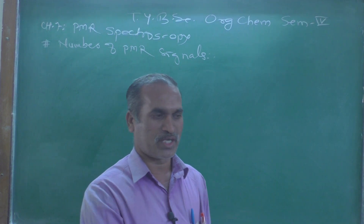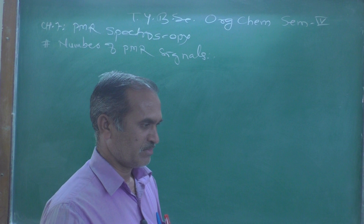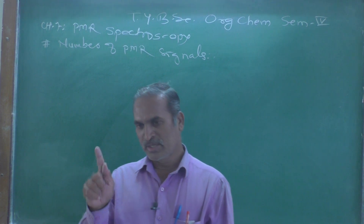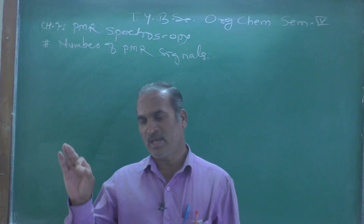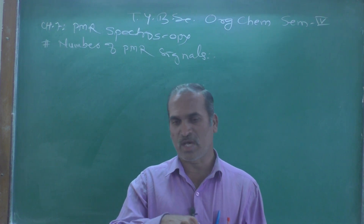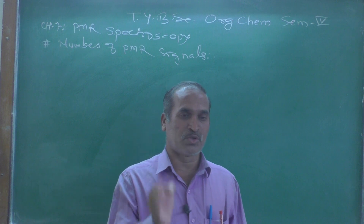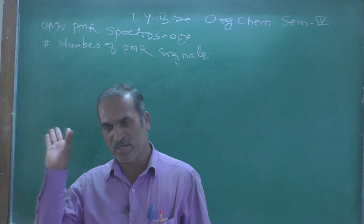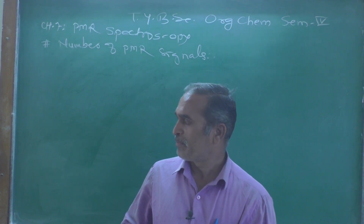Let us extend these concepts further so that you can become experts in identifying the number of signals present in a given organic molecule. The basic rule to remember: number of NMR signals is equal to the number of types of protons present in the given organic compound. Chemically equivalent protons produce only one signal; chemically non-equivalent protons produce different signals.